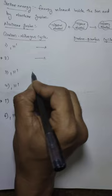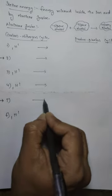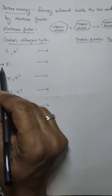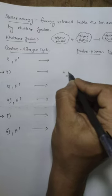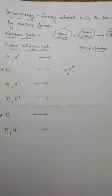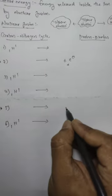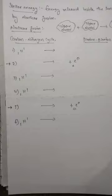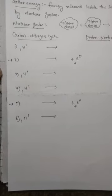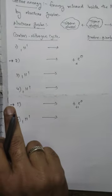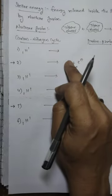We have to equate left-hand side and right-hand side. Wherever we have marked the arrow marks — in step two and step five — on the right side write down a positron, denoted as +1e0. So in the second step and the fifth step, on the right side we have two positrons (+1e0).